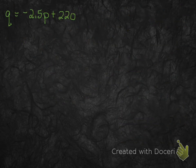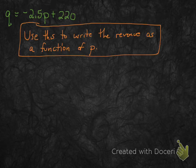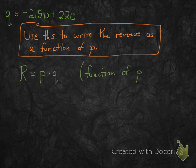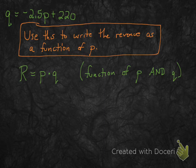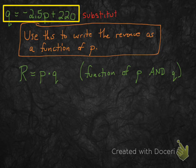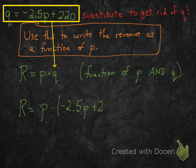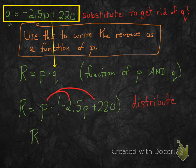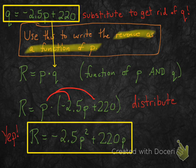On the previous slide, we did a process we've done before and wrote q as a function of p. Now we're going to write the revenue as a function of p. Revenue is p times q — price times quantity. The problem is this depends on both p and q, so we need to get rid of q by substituting, then simplify and distribute that p. Now you have r as only a function of p, which is what we wanted.